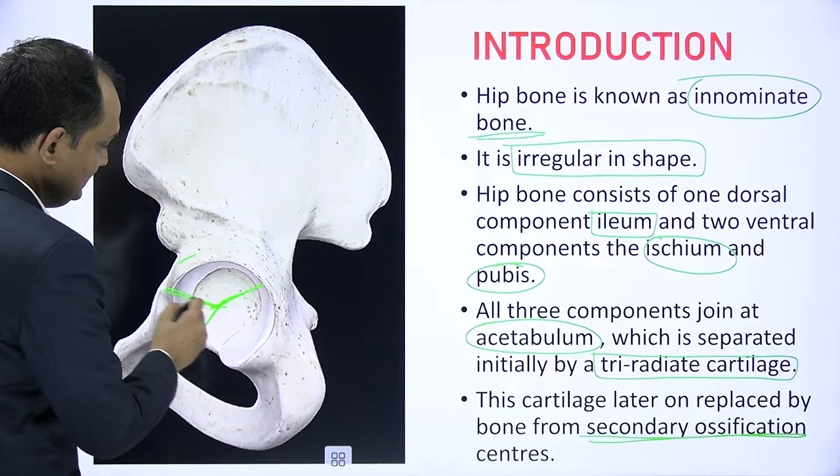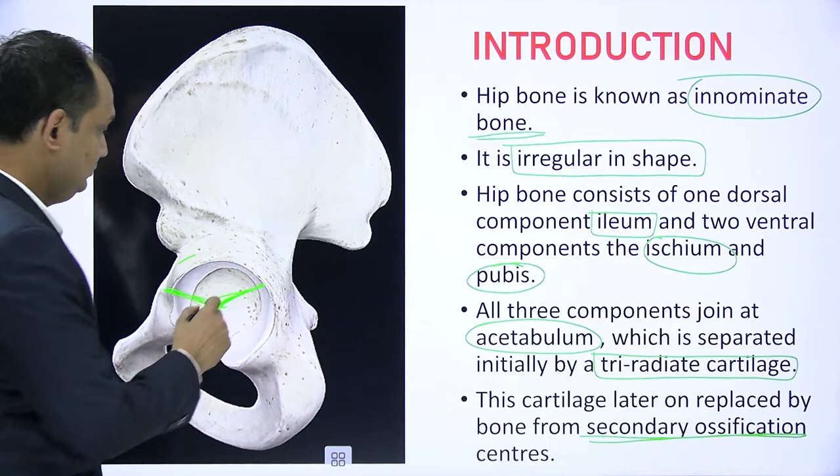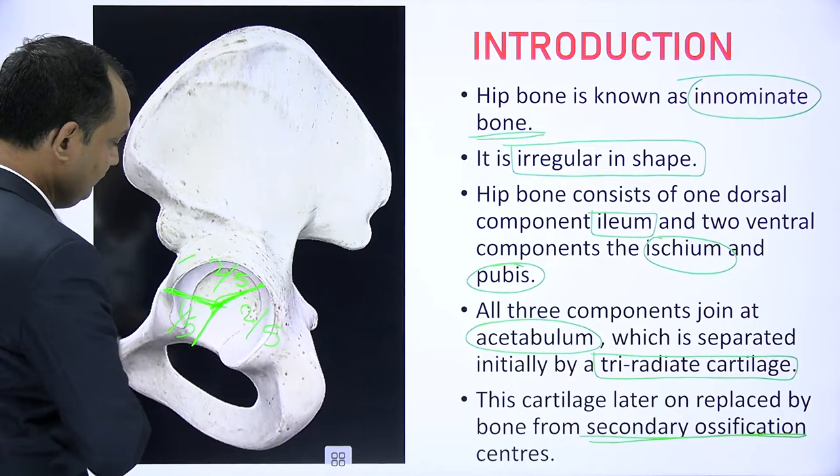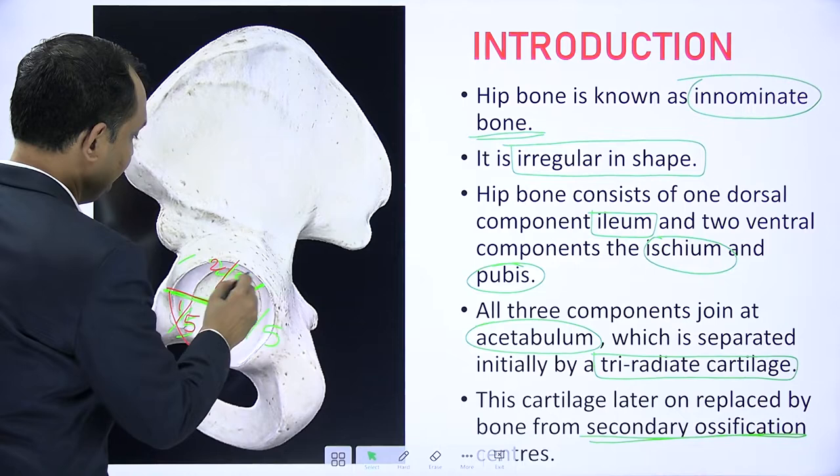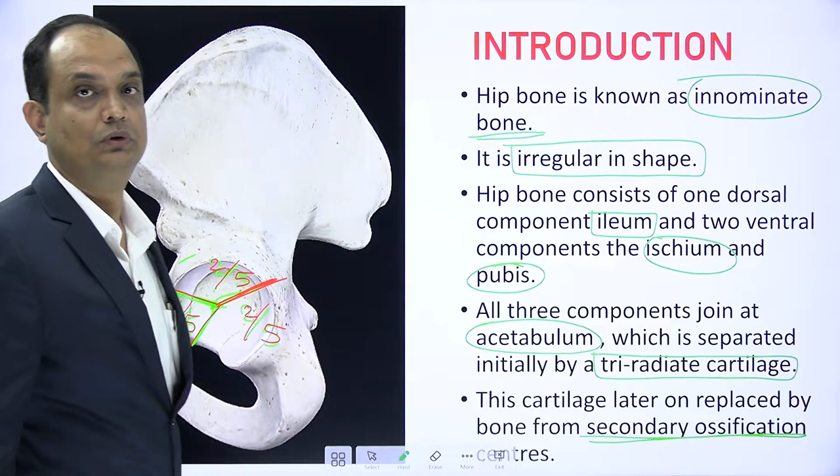When you will see this cartilage, you will realize that we can divide the whole acetabulum into two-fifths, two-fifths, and one-fifth parts. The smallest contribution of one-fifth comes from the pubis. The remaining two-fifths and two-fifths are contributed by the ilium and ischium bones of the hip bone.